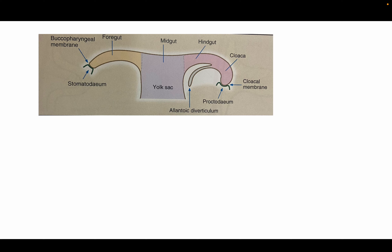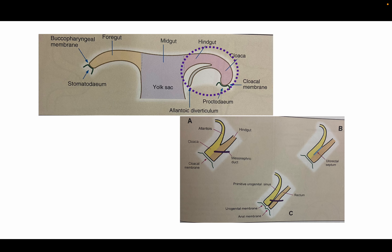This diagram shows the folding of the embryo forming the foregut, midgut, and hindgut. The buccopharyngeal membrane separates the foregut from the stomodeum, and the cloacal membrane separates the proctodeum from the cloaca. The allantois is a diverticulum arising from the hindgut. Our concern for today's lecture is this cloaca region.